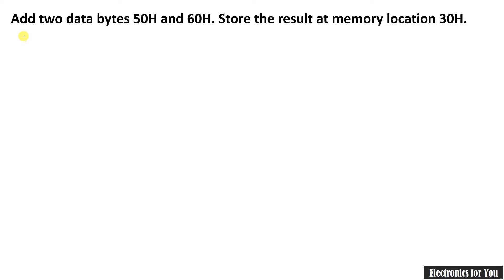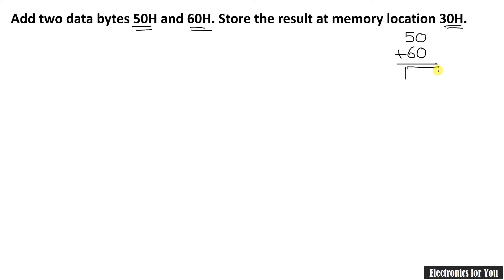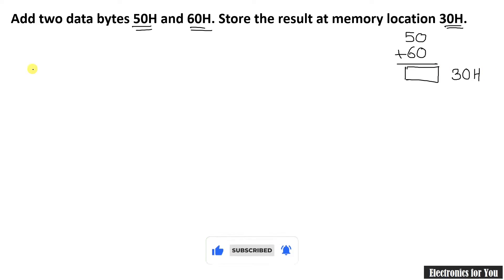Here is the problem: add two data bytes 50h and 60h, store the result at memory location 30h. We have to add just 50h and 60h — these are the two data bytes — in 8051 ALP and store the result in memory location 30h. Note that I am covering two programs here.